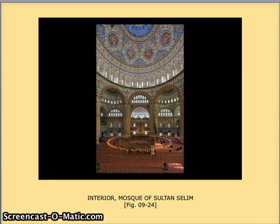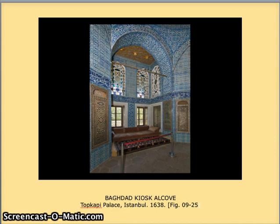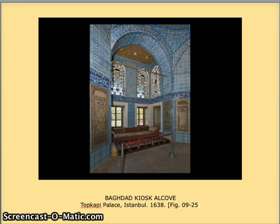Now let's take a brief look at mosaic again. This is called the Baghdad Kiosk Alcove, and what's notable here is the intricate tile work. This is the hideaway of the sultan — his own private space — and at the very center of the palace was his retreat, and that's what we're looking at here.